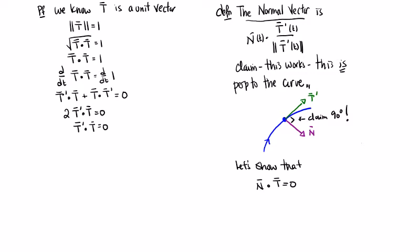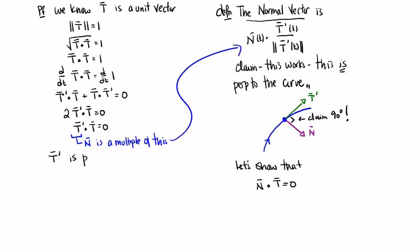The normal vector N is just a scalar multiple of T', as you can see from the definition. So this tells us that T' is perpendicular to T, and thus so is N. The practical upshot of this proof is that the normal vector is perpendicular to the curve — it does the job.